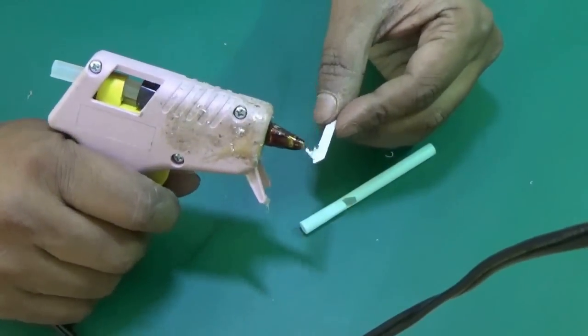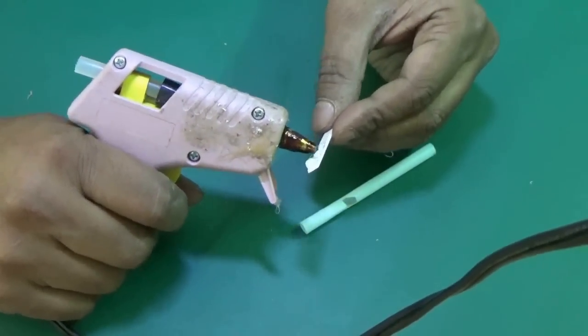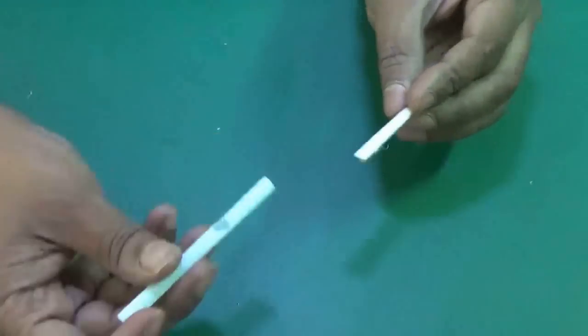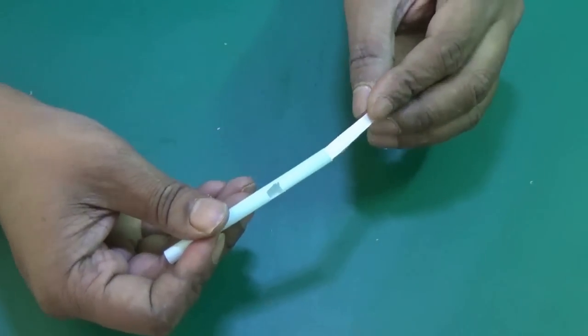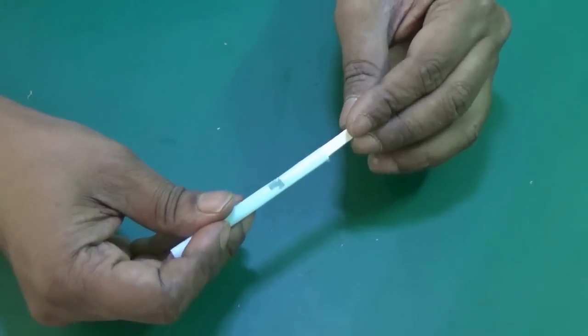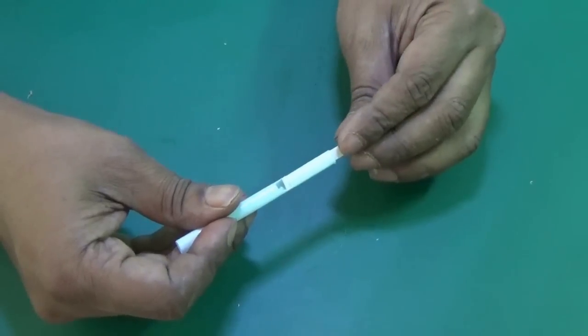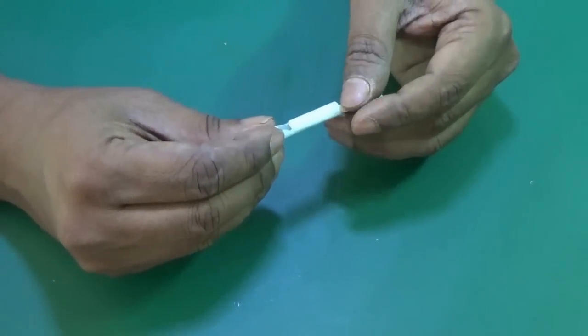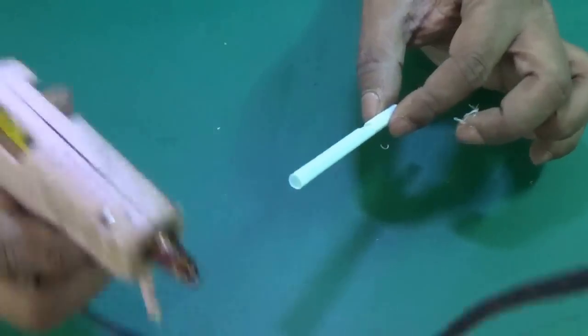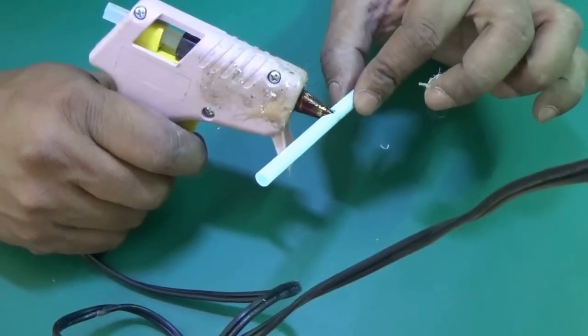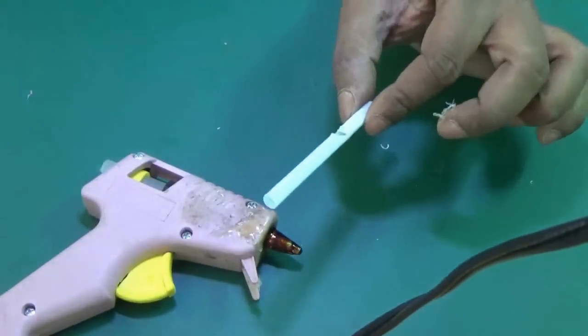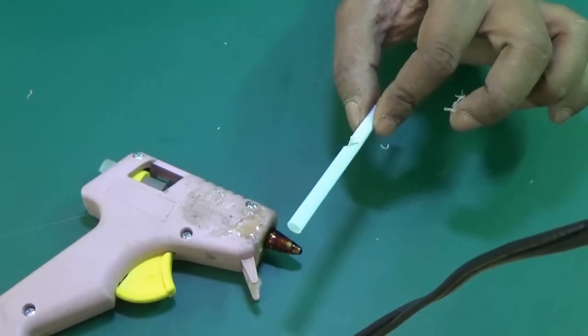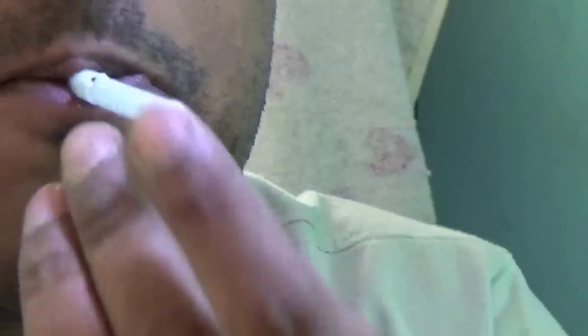Put hot glue below it and insert it till the cut. You may need to put some extra glue to block the front bottom part. Make sure the top part is open.